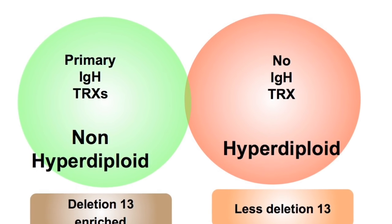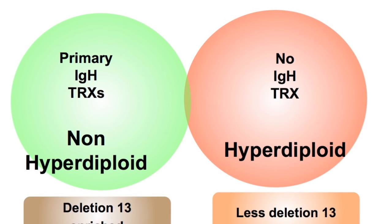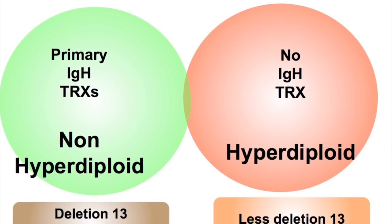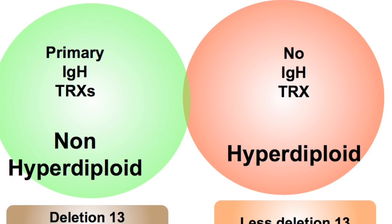There's the myeloma type we call hyperdiploid myeloma. What this means is that in some myeloma situations, as the myeloma cells were normal, at some point during cell division something goes wrong, and they keep an extra copy of a chromosome. All of our cells have the same number of chromosomes — 23 pairs. If you're male, 46XY; if you're female, 46XX.